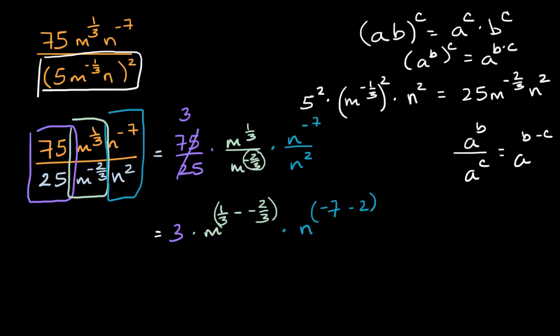And so now we are in the home stretch. This is going to be equal to 3 times m to the, what's 1 3rd minus negative 2 3rds? Well that's the same thing as 1 3rd plus 2 3rds, which is just 3 3rds, which is just 1. So this is just m to the first power, which is the same thing as just m. And then that is going to be times negative 7 minus 2. That is negative 9. So times n to the negative 9th power. And we are done.